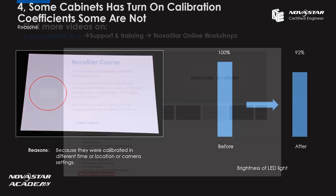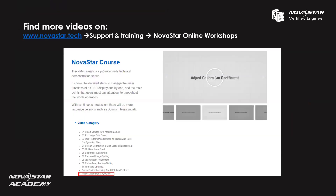So how can we solve it? This is the important part. In our Nova LCT software, we have a function called Adjust Calibration Coefficient. The software settings for this are extensive, so if you want to know more about this part, please go to the NovaStar tech support training, NovaStar online workshops, go to the NovaStar course, and you will find a video we prepared for you. We will not show detailed settings today, but please check that video.